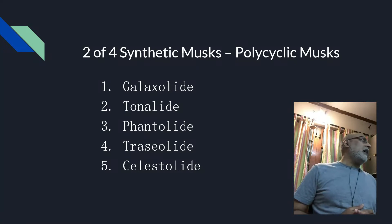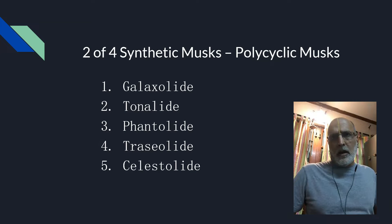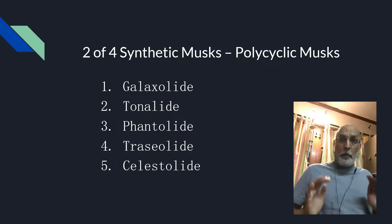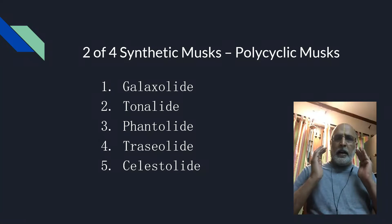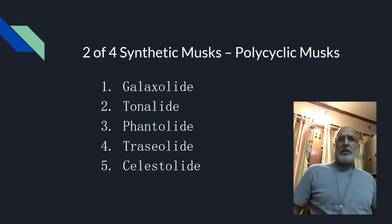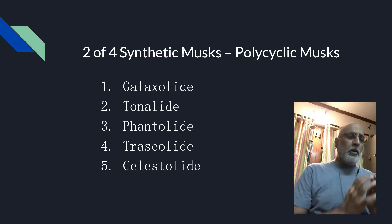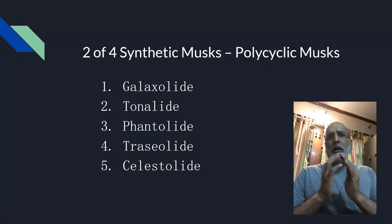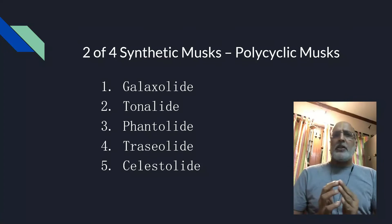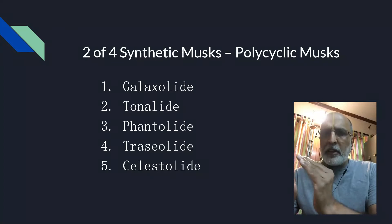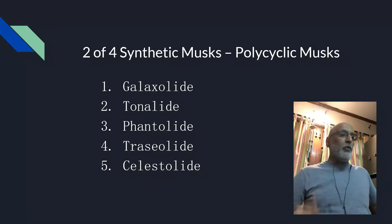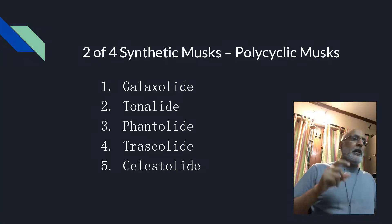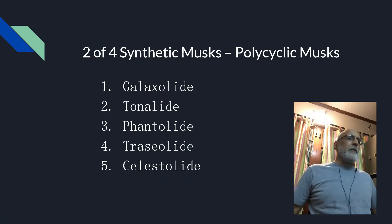Polycyclic musk is again restricted, not prohibited. When I say prohibited, it can't be used — it is banned. When I say restricted, it is restricted by regulatory considerations: in a certain application like toilet soap, a certain percentage is allowed; in detergent or fabric care, a certain percentage; in home care or agarbatti, a certain percentage is allowed. Restricted means you cannot use it the way you want — you can use it only up to the level permissible by regulatory considerations. So, nitro musk, polycyclic musk.